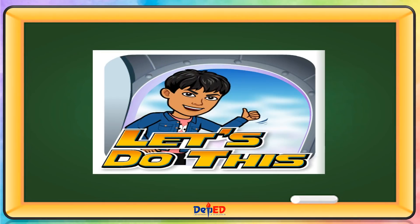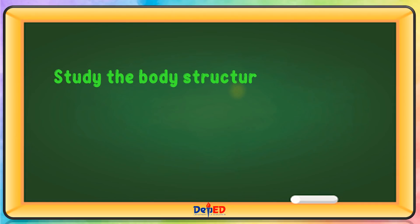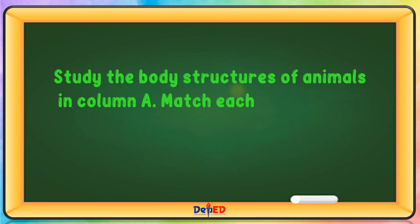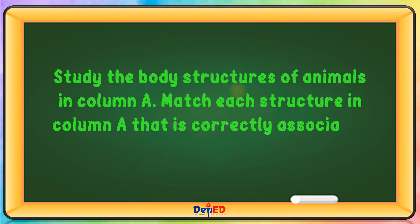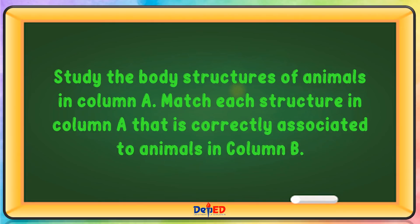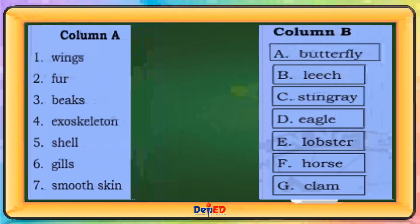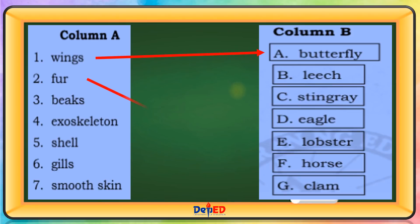Let's do this! Study the body structures of animals in Column A. Match each structure in Column B that is correctly associated to the animals. Wings is for butterfly. Fur is for horse. Beaks is for eagle. Exoskeleton is for lobster. Shell is for clam. Gills is for stingray. Smooth skin is for leech.